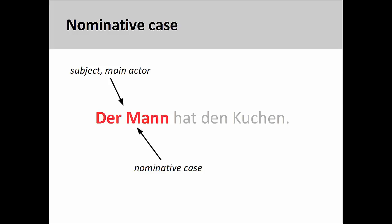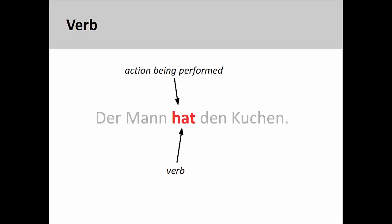You will remember that the subject of a sentence, which is always in the nominative case, is like the main actor on a stage — the person or thing performing an action. Here the main actor is 'der Mann,' the man. And the action that the man is performing is the act of having or possessing something.